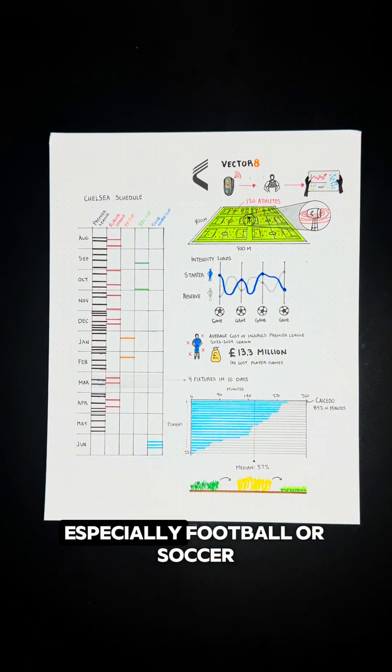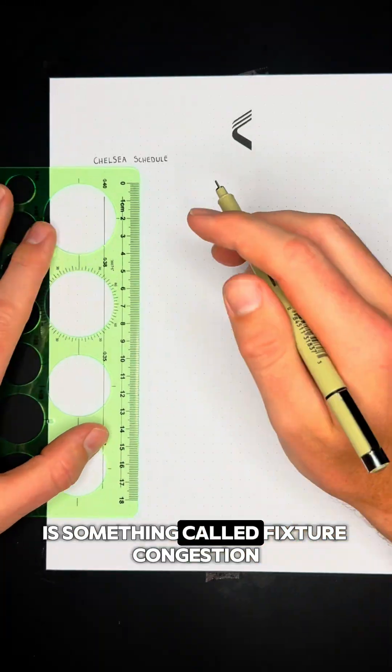One of the biggest challenges in modern sports, especially football or soccer, is something called fixture congestion.